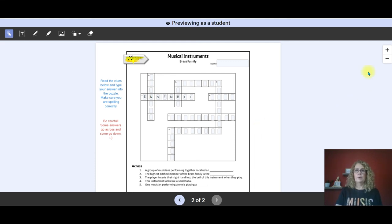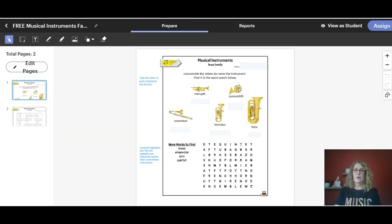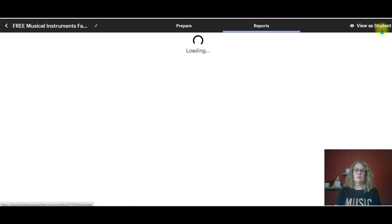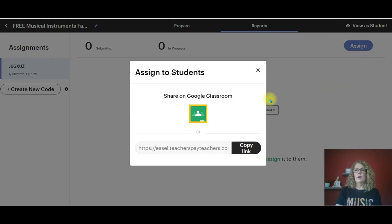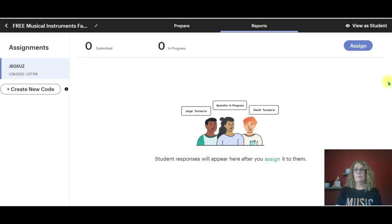Now that we know what this activity is all about, let's close out student view and come over here to assign the activity. Once again, you can assign it through Google Classroom or through the link. And if you have more than one class, generate another code for each class. That'll keep those separated for you. I hope this gives you some ideas of how you can easily use Easel in your elementary music classroom.